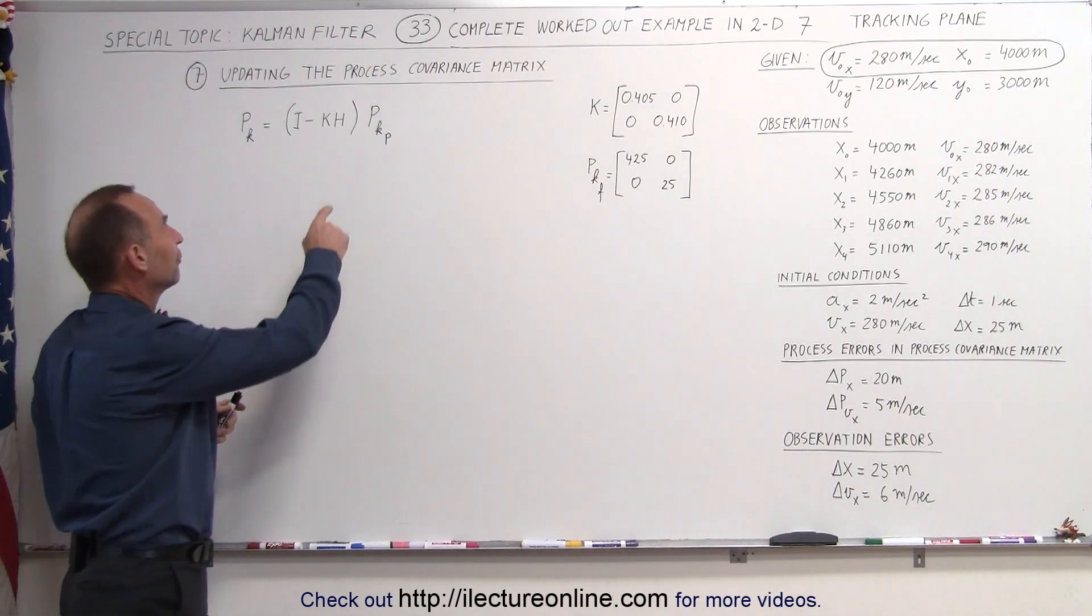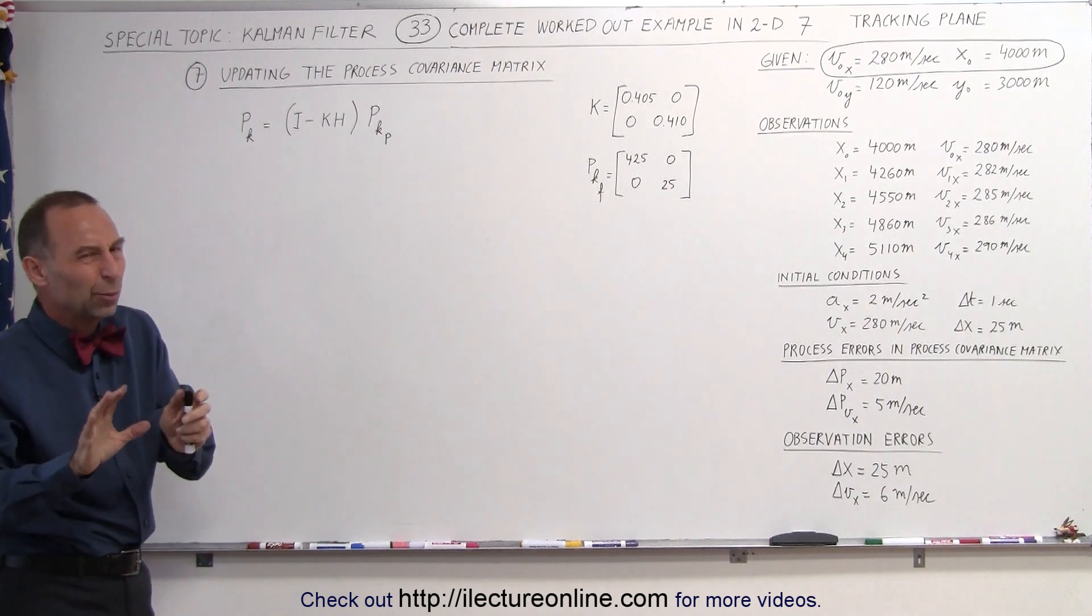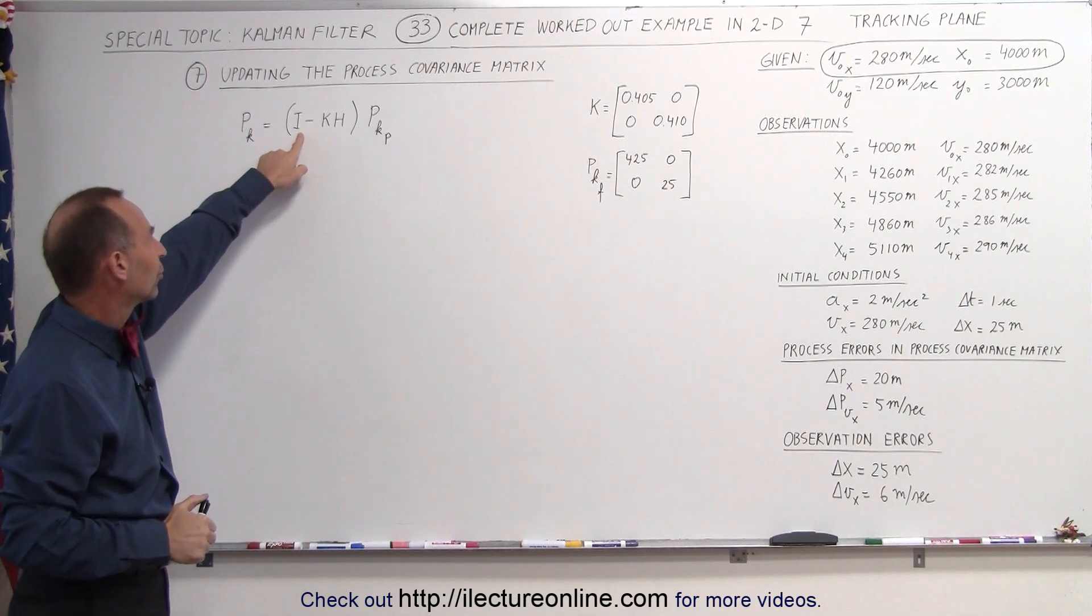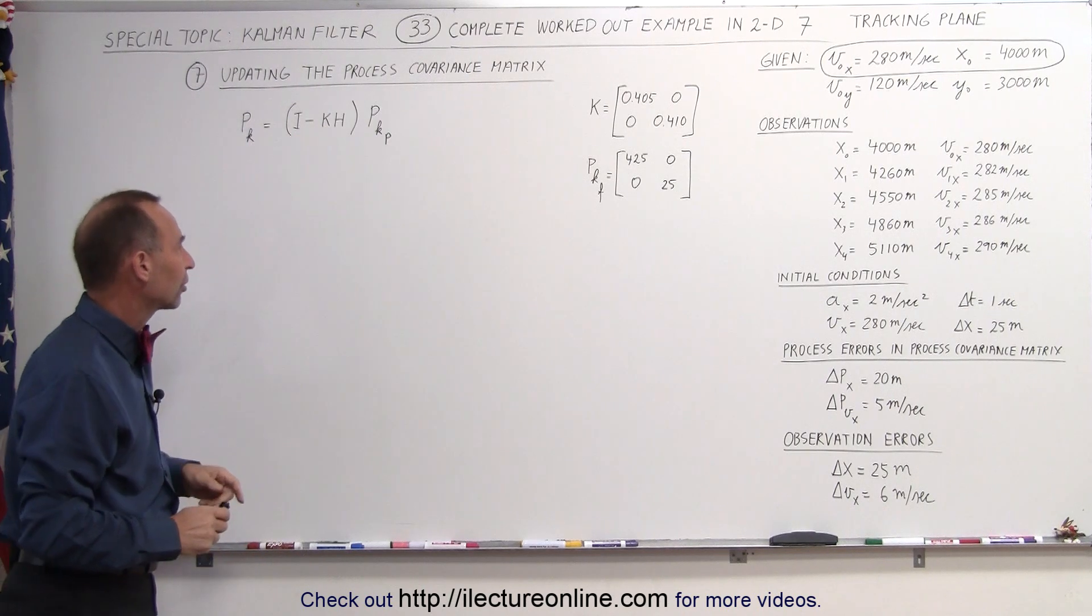Again, H is that matrix that allows us to convert K to the format of the identity matrix, but in this case we don't need to worry about that because this is going to be a 2 by 2 matrix, and so is the Kalman gain matrix.